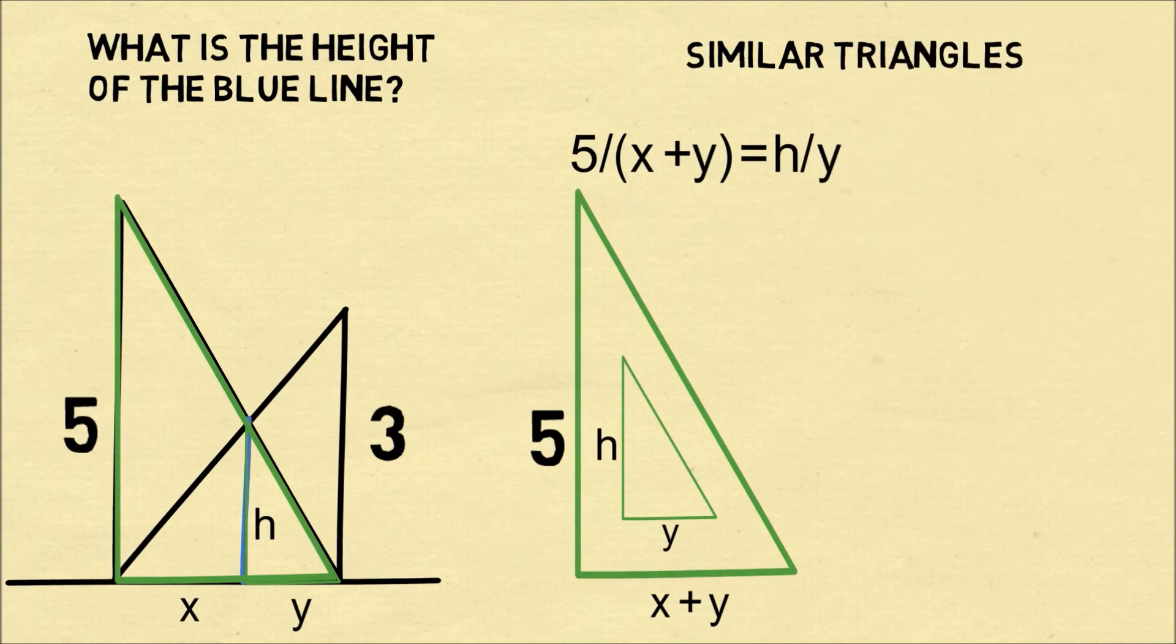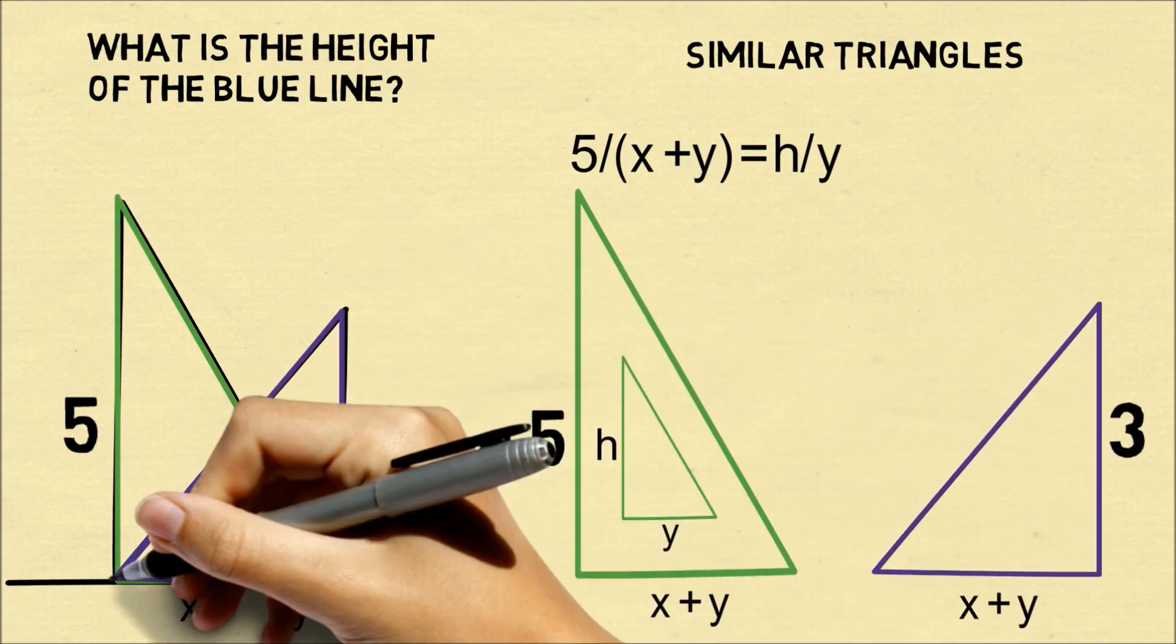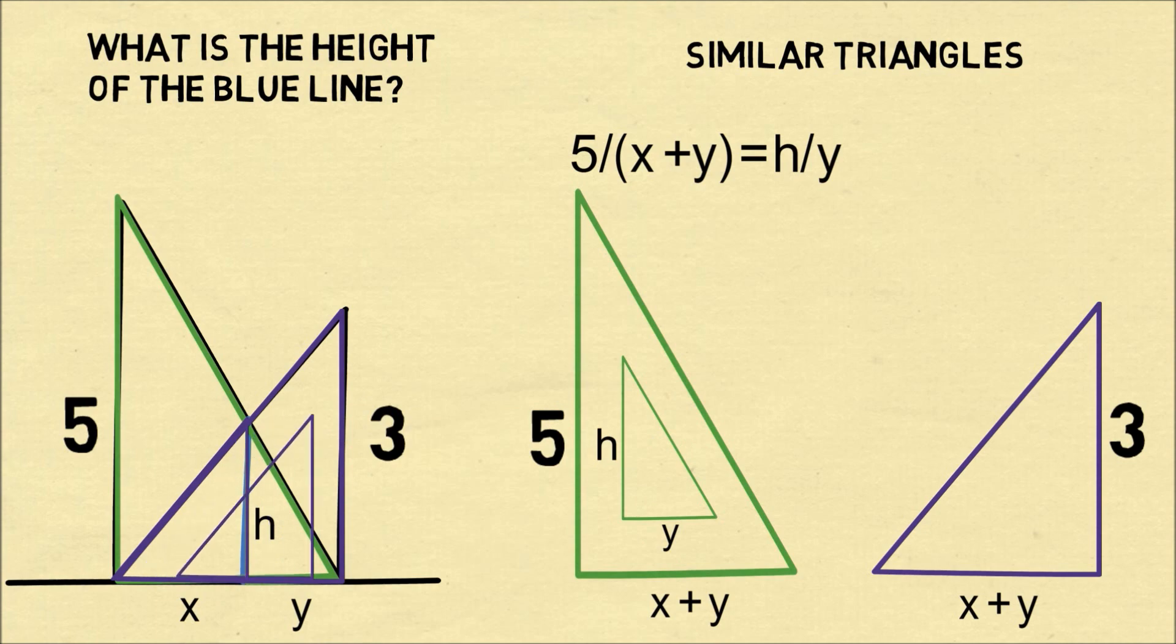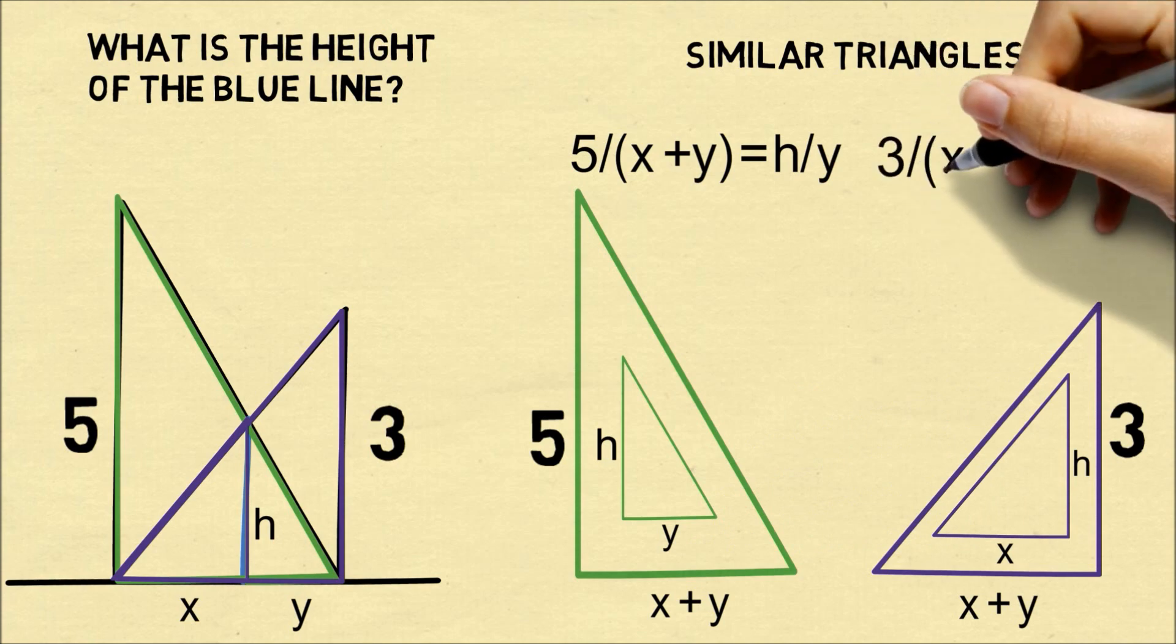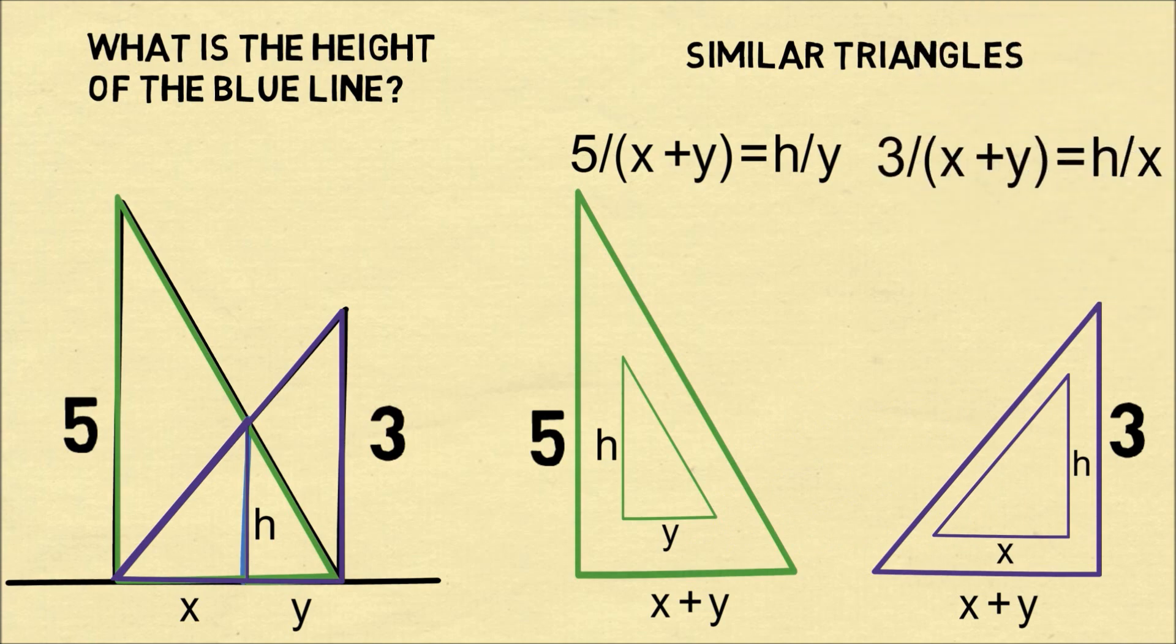Therefore, five divided by x plus y will equal h over y. For the wall with the height of three, we can also locate some similar triangles, which we'll set out to the side. We can also say the proportions of the legs will be equal. So 3 over x plus y equals h over x.